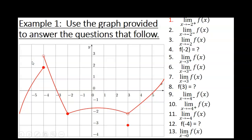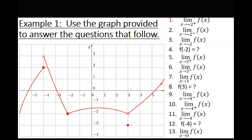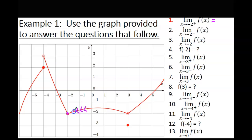Here's our first example. We've got a graph, and I want to evaluate the limit. Remember, the answer is a y-value. The question is: what y-value am I approaching as x is approaching negative 2 from the right? That little plus means the right. Here's my curve — I want to find where x equals negative 2, approach that point from the right. What y-value do I seem to be approaching? Negative 2. That's your answer.